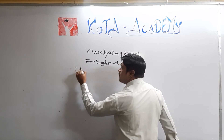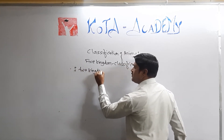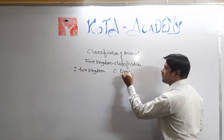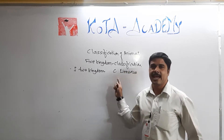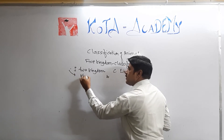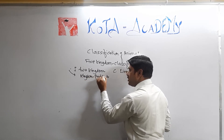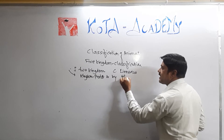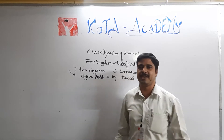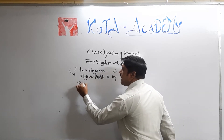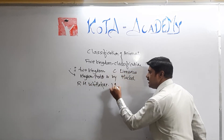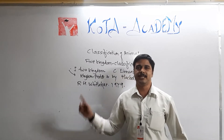First, the two Kingdom Classification was proposed by Carolius Linnaeus. The third Kingdom Protista was added by scientist Haeckel. And recently, the Five Kingdom Classification was proposed by scientist R.H. Whittaker in 1969.